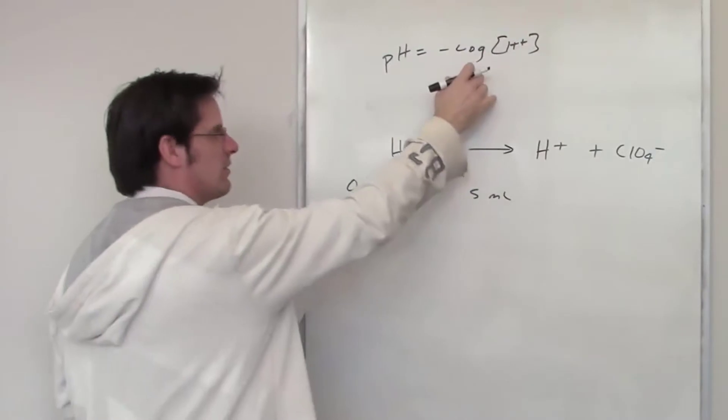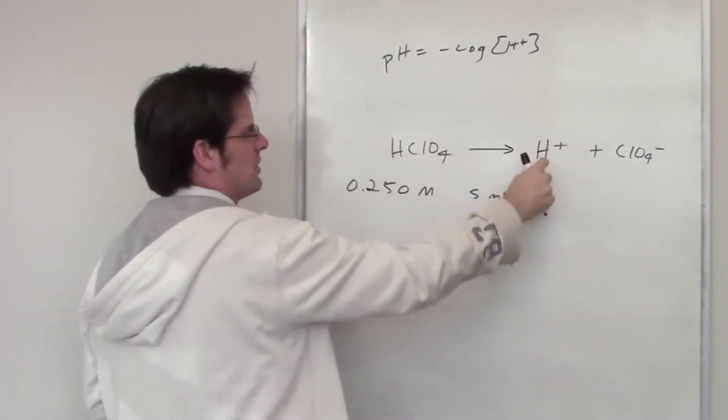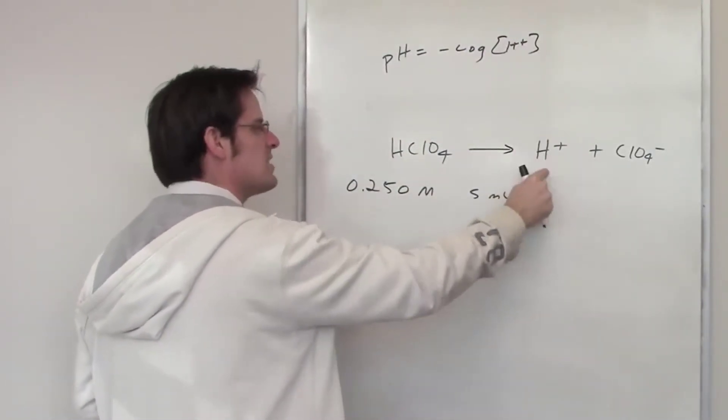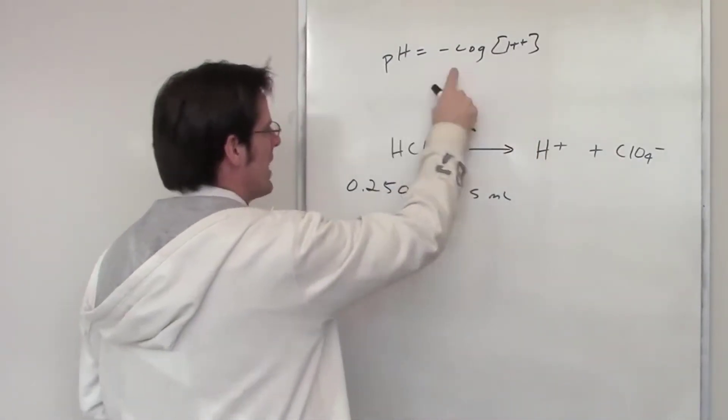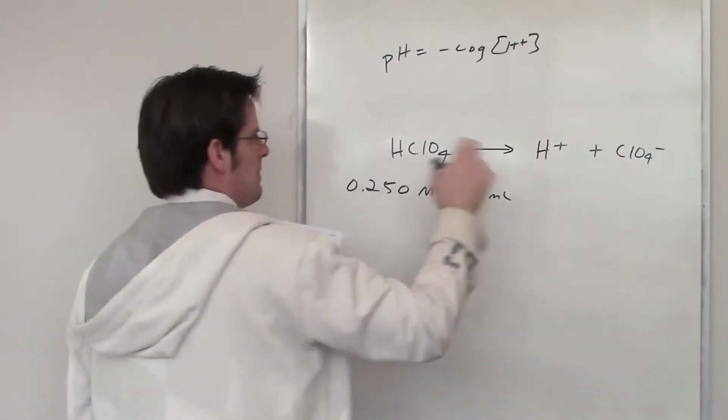And the pH, we should remember, is equal to negative log of the H+ concentration. So what I'm trying to get at is what is the concentration of H+. If I can figure that out, I can throw that number in there, and then I get my pH.